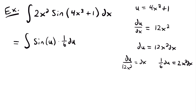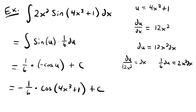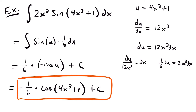Pulling 1/6 out front, we have 1/6 times the integral of sin(u) du. The integral of sine is negative cosine, so we get negative cosine of u plus c. Now substituting back what we set u equal to — 4x³ + 1 — our final answer is negative 1/6 times cosine(4x³ + 1) plus c.